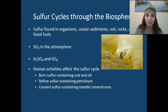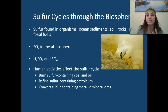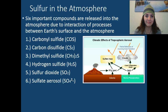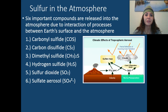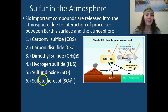For example, down in Galveston, where I'm from, you can see bright yellow piles of sulfur — and if the wind hits just the right way, you can smell it too. There are six important compounds released into the atmosphere through the interaction of processes between Earth's surface and the atmosphere: carbonyl sulfide, carbon disulfide, dimethyl sulfide, hydrogen sulfide, sulfur dioxide, and sulfate aerosol.